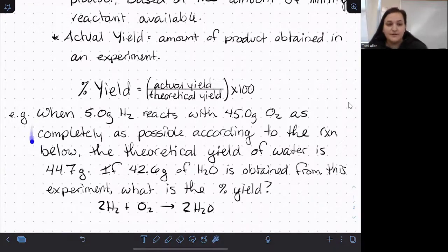In the previous video, we dealt with the situation when 5 grams of hydrogen reacts with 45 grams of oxygen. We figured out the theoretical yield. In the last video, it was 44.7 grams. So I'm just giving it to you here. So if your theoretical yield is 44.7 grams, and in the lab, you managed to isolate 42.6 grams of water, what is the percent yield?